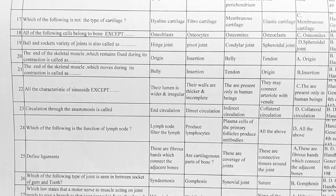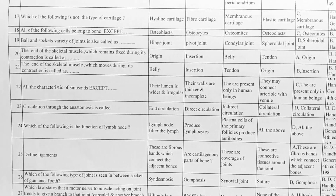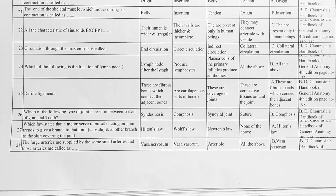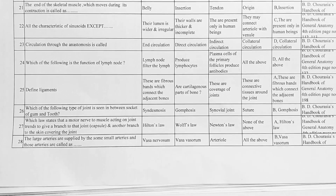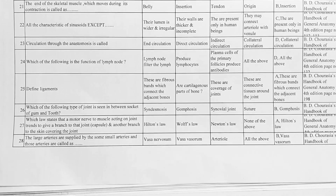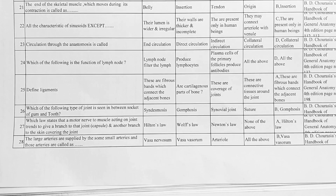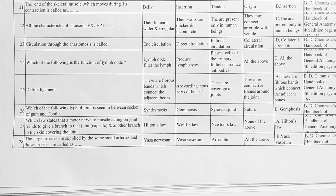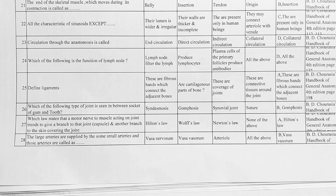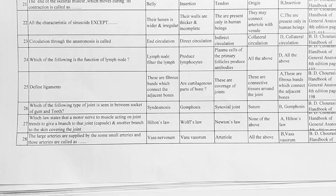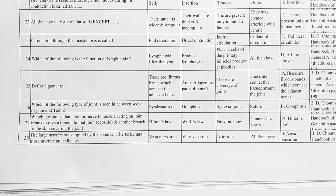Next, all characteristics of sinusoids except — options: A. their lumen is wider and irregular, B. their walls are thicker and incomplete, C. they are present only in human beings, D. they may connect an arteriole with a venule. Correct answer is C, they are present only in human beings.